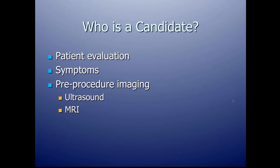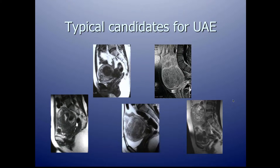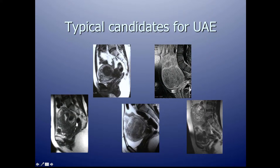Here are five different MRI examples of typical candidates for the uterine artery embolization procedure — these are all views from the side. There's an enlarged uterus with multiple fibroids contained within it, and these are all patients who are candidates to have the procedure.